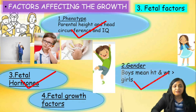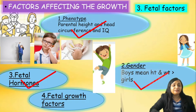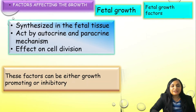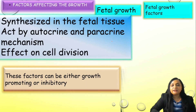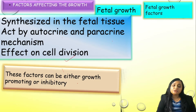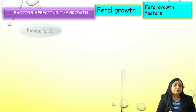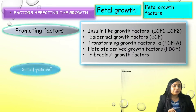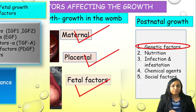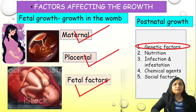We have discussed fetal factors specifically phenotype, gender, and fetal hormones. Now a few words to complete the list — fetal growth factors. Those are synthesized in fetal tissue, act by autocrine and paracrine mechanism, and have an effect on cell division. These factors could be promoting or inhibitory. You do not need to remember the specific list because it is not important from an exam point of view. That compiles the list of maternal, placental, and fetal factors.